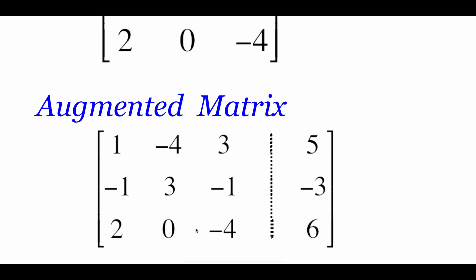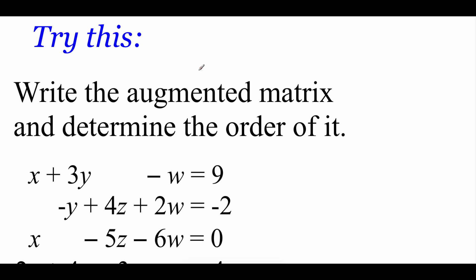The other type of matrix we can set up is called an augmented matrix. You'll notice we have our coefficient matrix on the left-hand side, but then we add on an extra column which contains the equals-to information from all of our equations. So the top equation was equal to 5, the second equation was equal to negative 3, and the third equation was equal to 6.